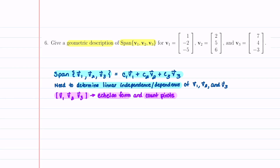We're going to take a matrix and put our three vectors in it. So we have 1, −2, −5, then 2, 5, 6, and then 7, 4, −3.